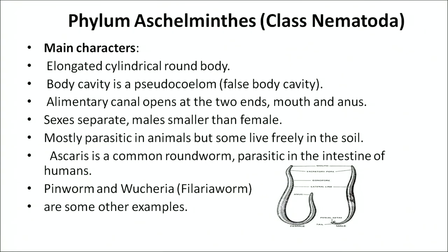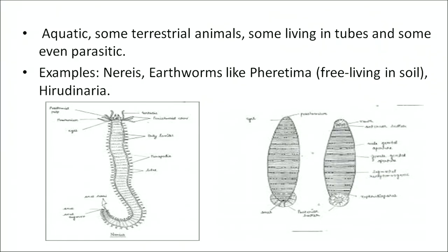The next phylum is phylum Aschelminthes, which belongs to class Nematoda. It has a false coelom (pseudocoelom) and notochord is absent, so it is non-chordate. Examples include roundworms and threadworms. They have an elongated, cylindrical, round body. The body cavity is a pseudocoelom — a false body cavity. The alimentary canal opens at both ends: they have a mouth and an anus. Sexes are separate; males are smaller than females. They are mostly parasitic but some live freely in the soil. Ascaris is a common roundworm, parasitic in the human intestine. Pinworm and Wuchereria (filaria worm) are other examples.